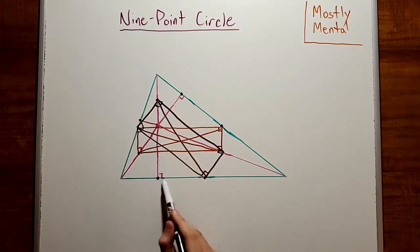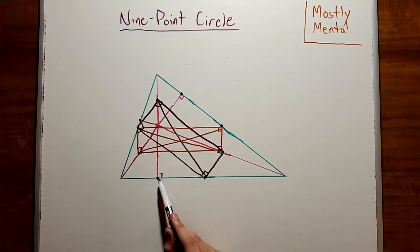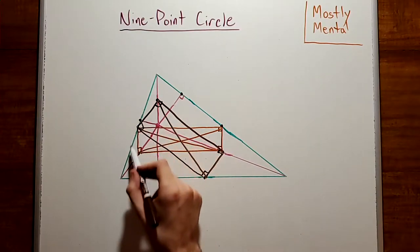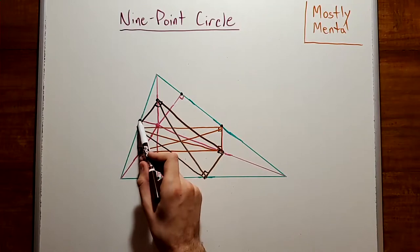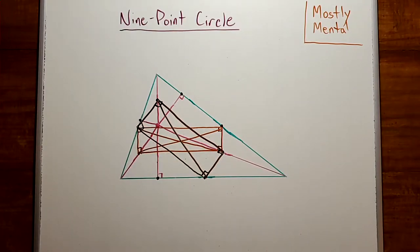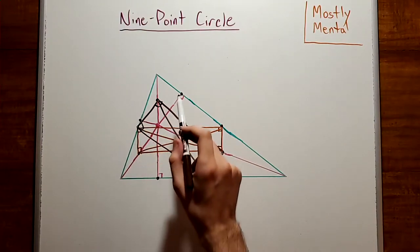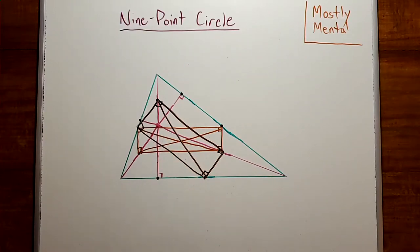Now notice that this triangle down here has a diameter of the circle as one of its sides, and it also has a right angle since this is the altitude. By that second fact we mentioned earlier, this vertex must also lie on that same circle as the six points we saw. And by the same logic, the feet of the other two altitudes must also lie on that circle. So we've shown that in any triangle, these nine points of interest — the midpoints of each side, the feet of each altitude, and the halfway points between the vertices and the orthocenter — all lie on a circle.